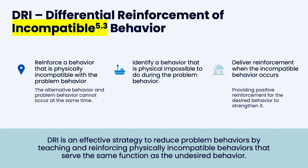The second type is differential reinforcement of incompatible behavior — DRI. This means reinforcing something that is physically incompatible with the problem behavior, so it is impossible to do the problem behavior and the replacement behavior at the same time. The function doesn't matter here. The alternative behavior and the problem behavior cannot occur at the same time based on their topography. A behavior that serves the same function is ideal — that's a DRA — but sometimes we can't figure that out or nothing works, so we use a DRI instead. You identify a behavior that is physically impossible to perform during the problem behavior, and then deliver reinforcement.